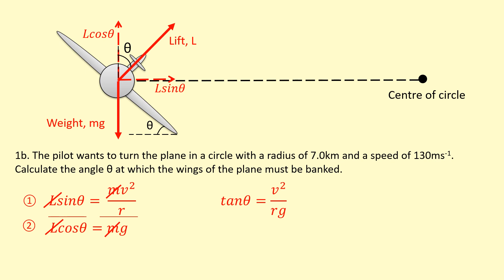Let's put the numbers in. So our speed is 130 meters per second, squared. I'm turning the radius into meters—7,000 meters—times 9.81. Taking tan inverse of this gives me an angle of 13.8 degrees.